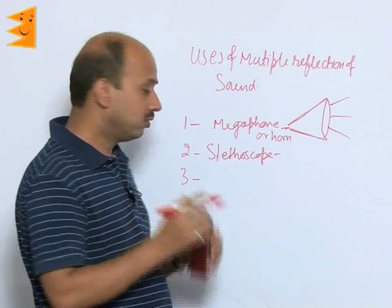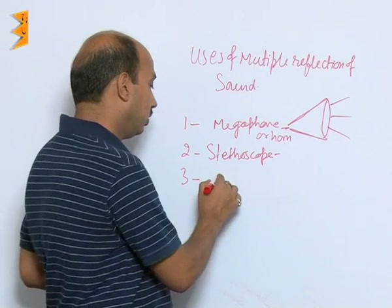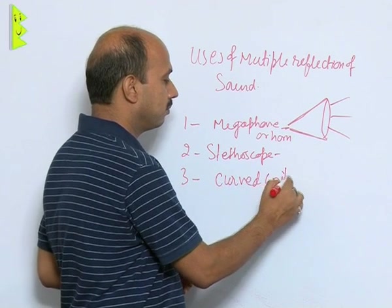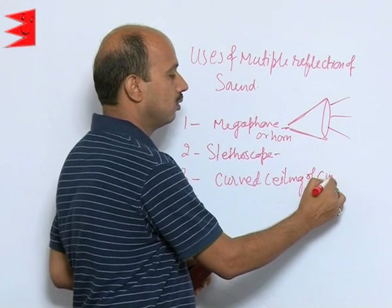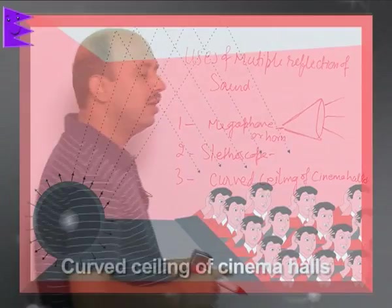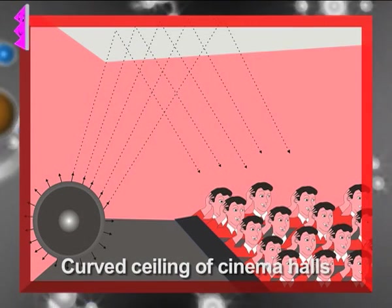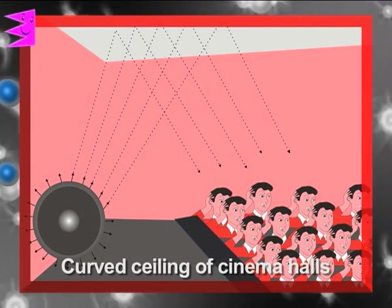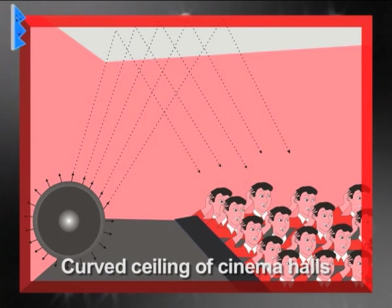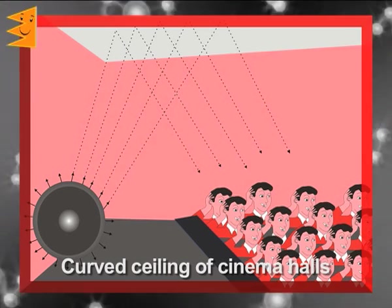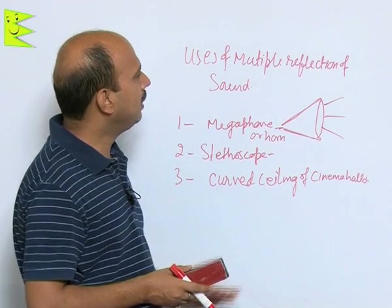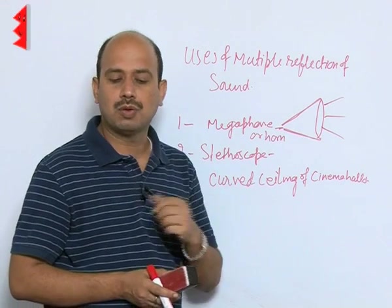A third application: the ceilings of cinema halls are always curved surfaces — curved ceilings of cinema halls and auditoriums. Their ceilings are made curved because the reflection of sound takes place and this sound reaches every corner of the hall or auditorium. These are the different applications of multiple reflections of sound.